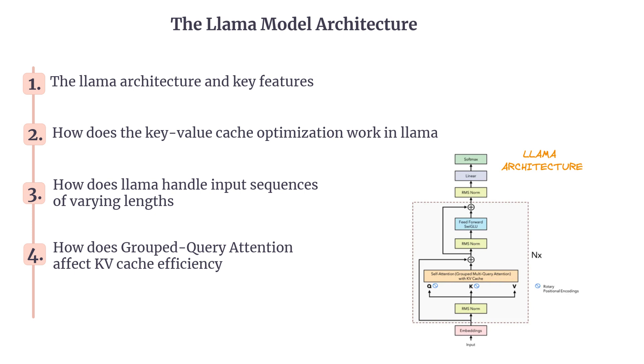Let's explore it in four parts: the LLAMA architecture and key features, how does the key value cache optimization work in LLAMA, how does LLAMA handle input sequences of varying lengths, and how does grouped query attention affect KV cache efficiency?